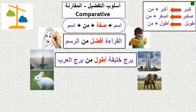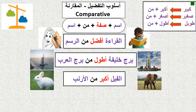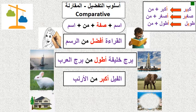Now compare between two animals. The first picture is an elephant and the second is a rabbit. Who is bigger? Of course the elephant is big. How to say that in Arabic? الفيل أكبر من الأرنب — the elephant is bigger than the rabbit.